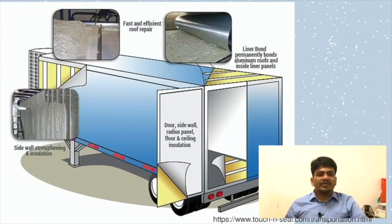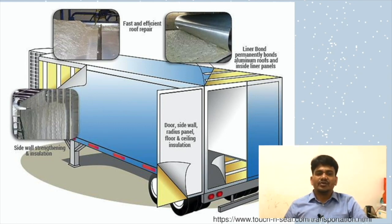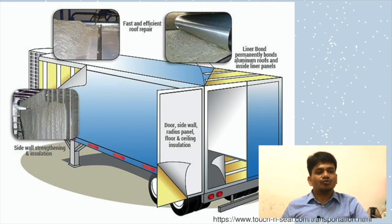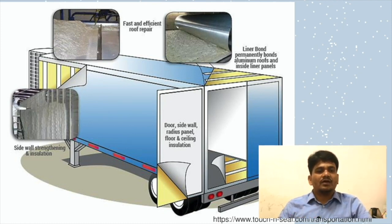Here we can see fast and efficient roof repair materials. Liner bond permanently bonds aluminum roofs and inside liner panels. For the door, sidewall, radius panel, floor, and ceiling insulation, we can see how sidewall strengthening and insulation is done. These are the different components and zones where insulation material is required, and what kinds of materials can be used as insulation to increase machine efficiency, energy efficiency, and overall system efficiency.